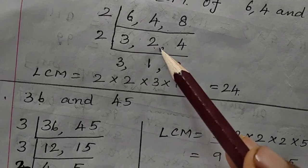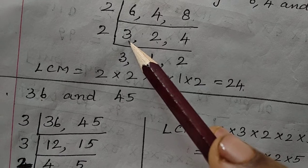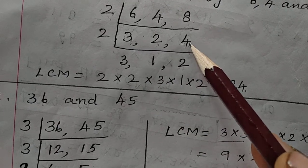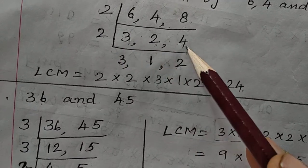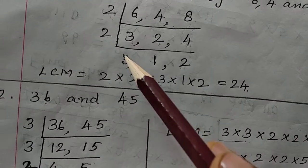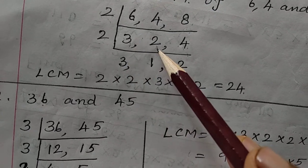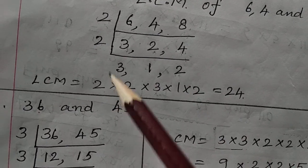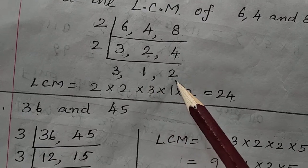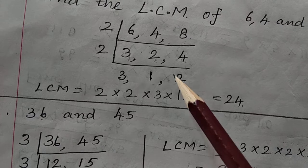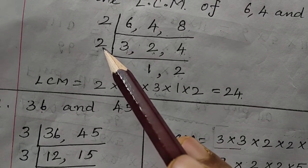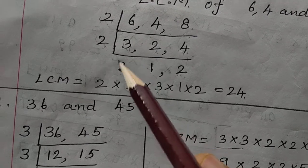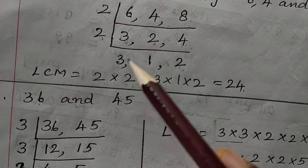3 is an odd number and cannot be divided by 2, so write 3 as it is. 2 and 4 are even, so divide them by 2: 2 ÷ 2 = 1 and 4 ÷ 2 = 2. LCM = 2 × 2 × 3 × 1 × 2. Note: writing 3 as it is does not mean 3 ÷ 2 = 3 — you simply have nothing to do with 3 in that step. Be very careful about this.